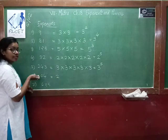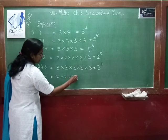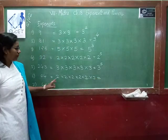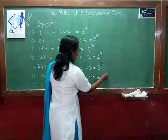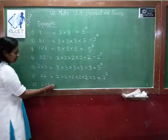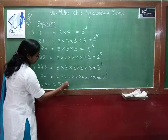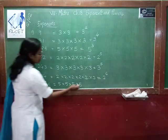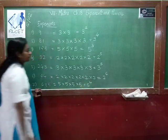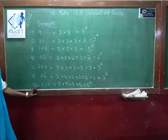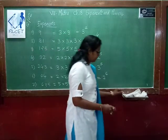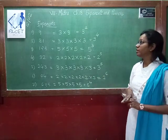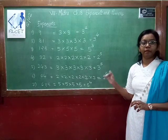For 64: 2 times 2 is 4, times 2 is 8, times 2 is 16, times 2 is 32, times 2 is 64 — so 2 is repeated 6 times, giving 2 power 6. For 625: it is divisible by 5 — 5 times 5 is 25, times 5 is 125, times 5 is 625 — so 5 repeated 4 times, giving 5 power 4. This is the concept of exponents: how many times the number is repeated is the exponent, and which number is repeated is the base.